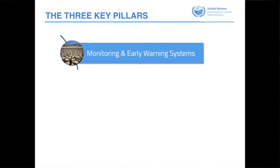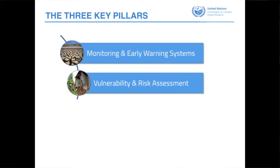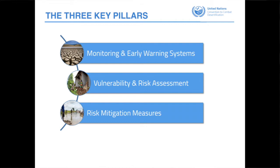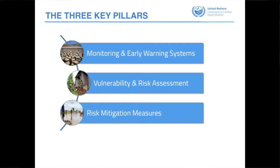Along the three pillars, we work to help countries develop early warning and monitoring systems, establish capacity for prediction and forecasting, and disseminate information as early as possible to local users and beneficiaries, including farmers. We also help countries do vulnerability mapping — identifying who is going to be affected and why, well ahead of time before drought strikes — and to develop appropriate, context-specific drought risk mitigation measures, as shown in the drought toolbox.